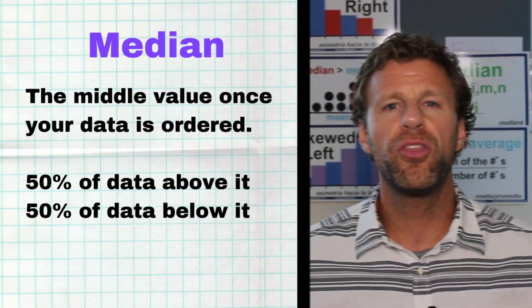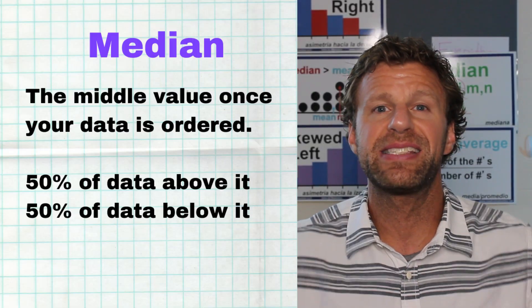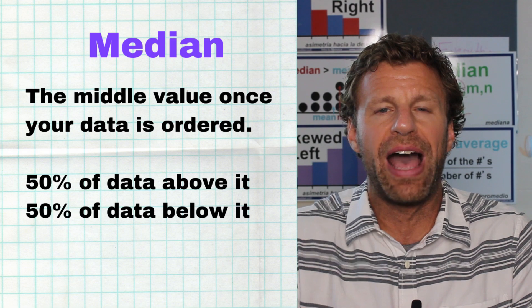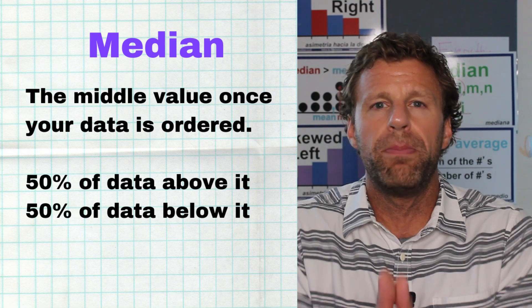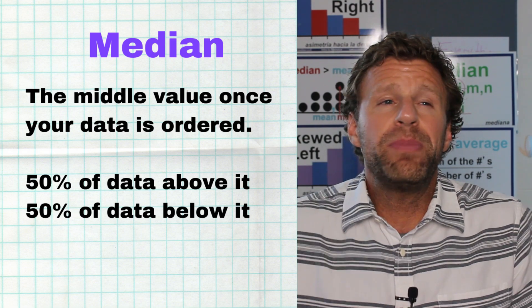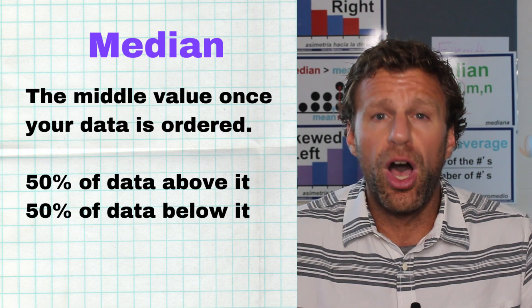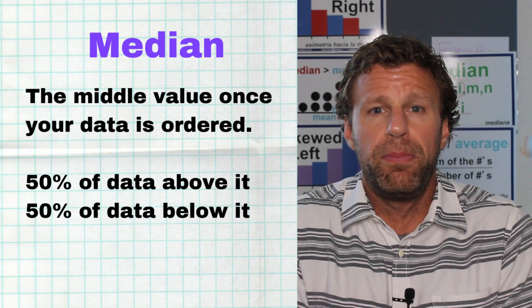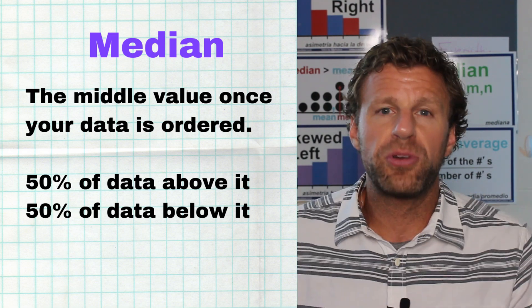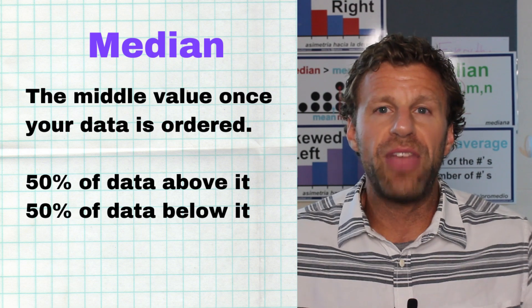Let's first talk about the median. The median of a data set is the center value — the value that's dead in the middle of the values. The median doesn't even care what the values are; it just wants to be the value that's in the middle, with 50% below it and 50% above it.